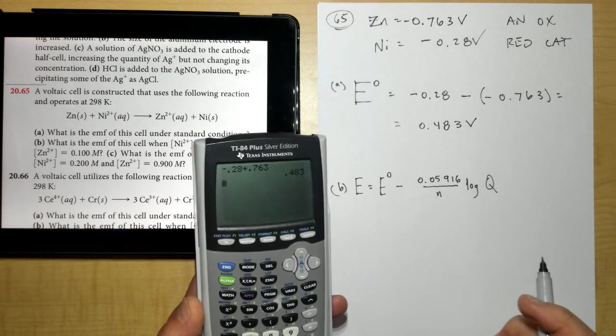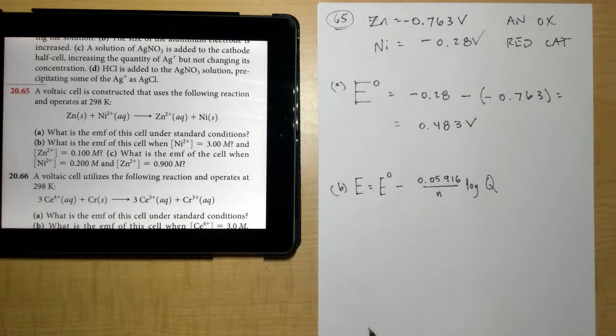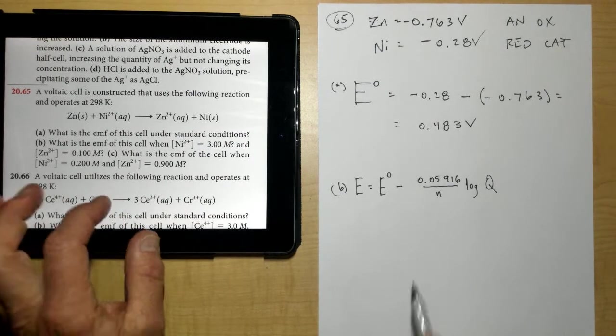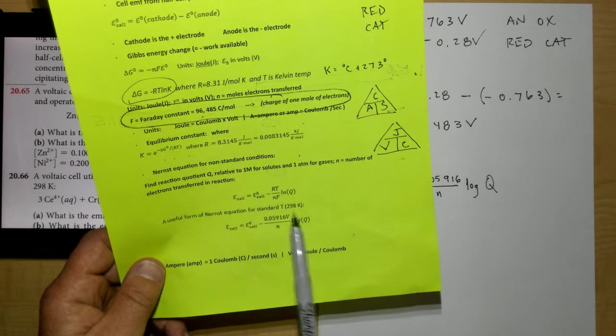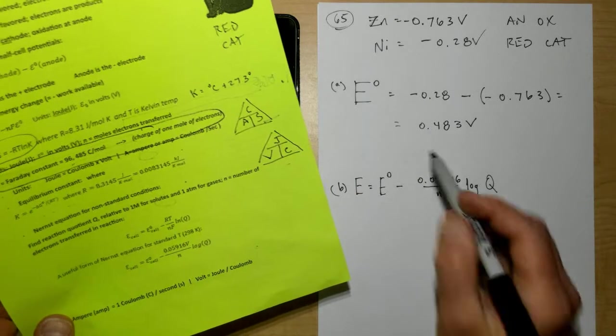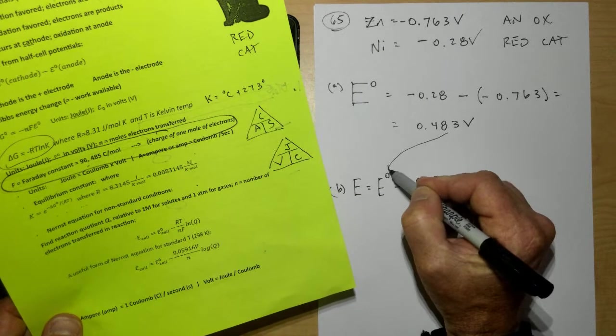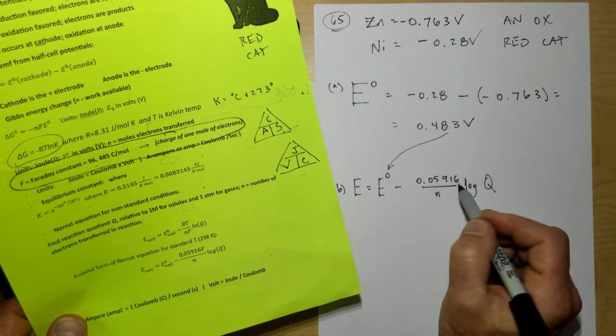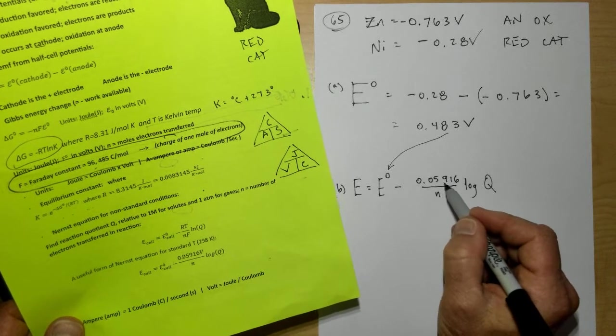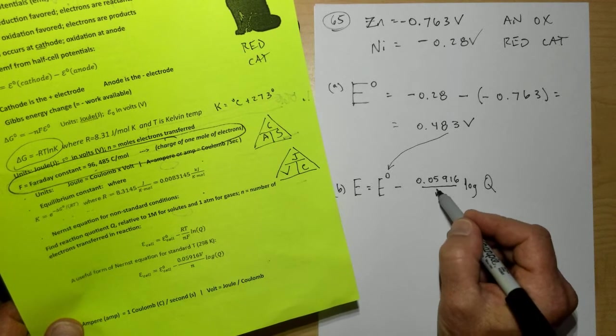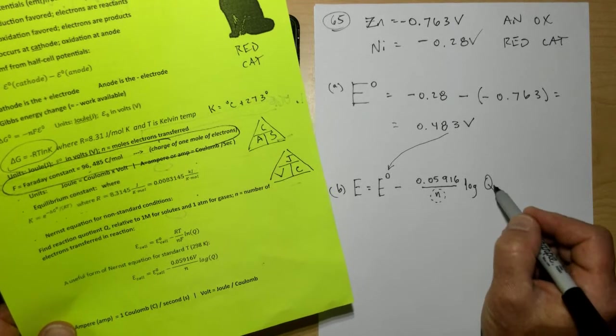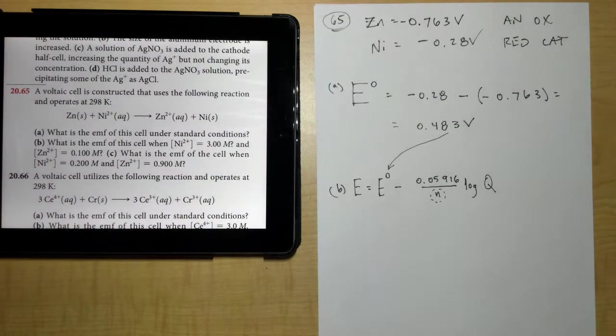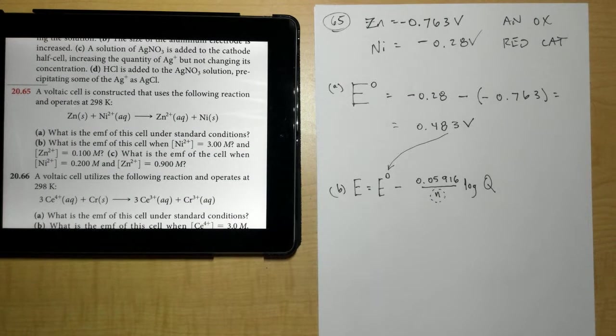And my E turns out to be 0.483 volts. Is that correct? Did somebody try that? Okay, thank you very much. Now in part B, it's at non-standard conditions. So I need to use what's called the Nernst equation to calculate this. The Nernst equation right down here is set up for being at 298K.